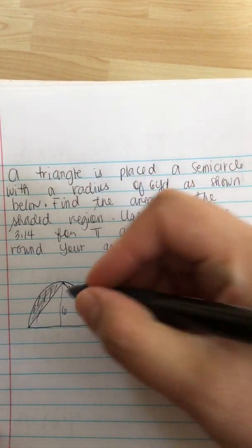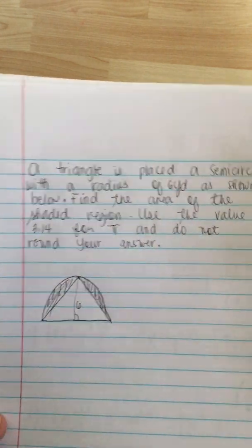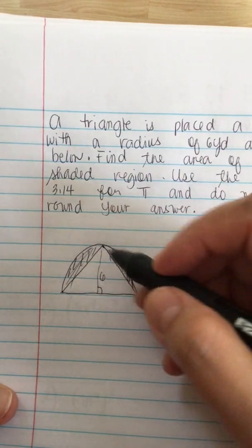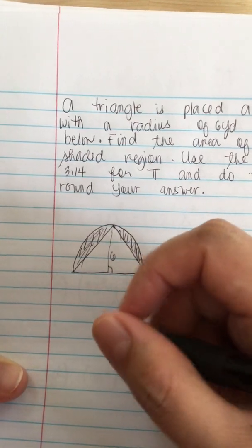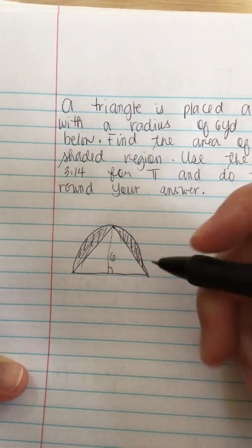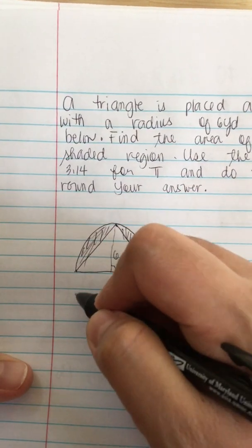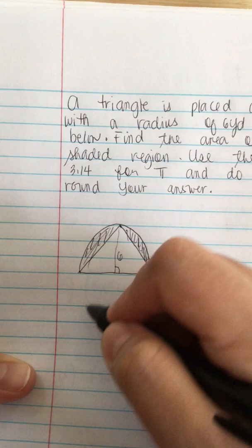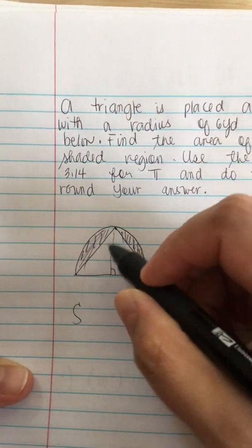This is 6 yards, so this is a semicircle. The formula for a circle is pi r squared. Since it's a semicircle, then it's pi r squared divided by 2.